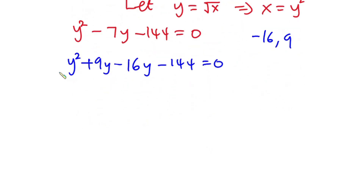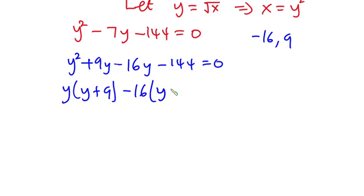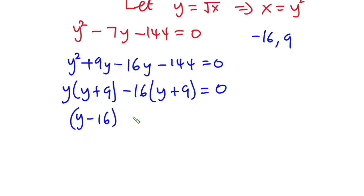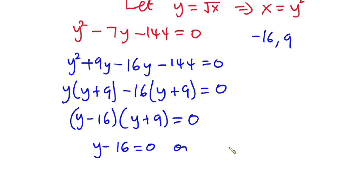Let's factorize this equation. We have y times (y plus 9), then negative 16 times (y plus 9), equals zero. So we have (y minus 16) as one factor and (y plus 9) as the other factor, and this equals zero.